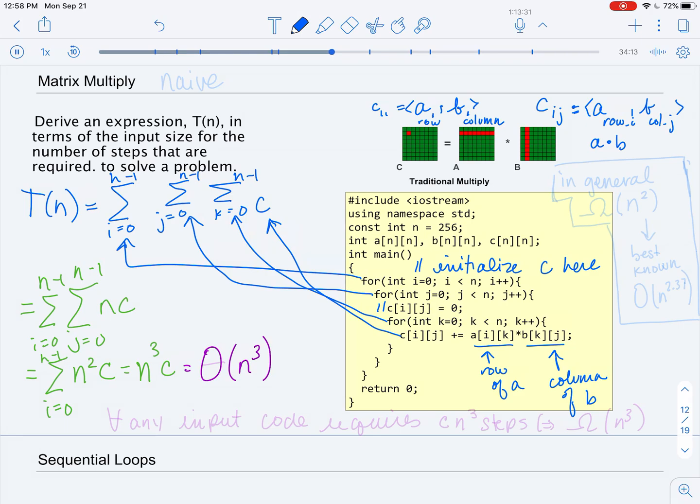But now we need to convince ourselves that we also have a lower bound, and our lower bound comes from the fact that this code behaves the same on any input. You'll notice that for any A and B, this code is going to run every single line, so we know that it is going to take at least big omega of n cubed, because for any input, the code requires some constant times n cubed steps.